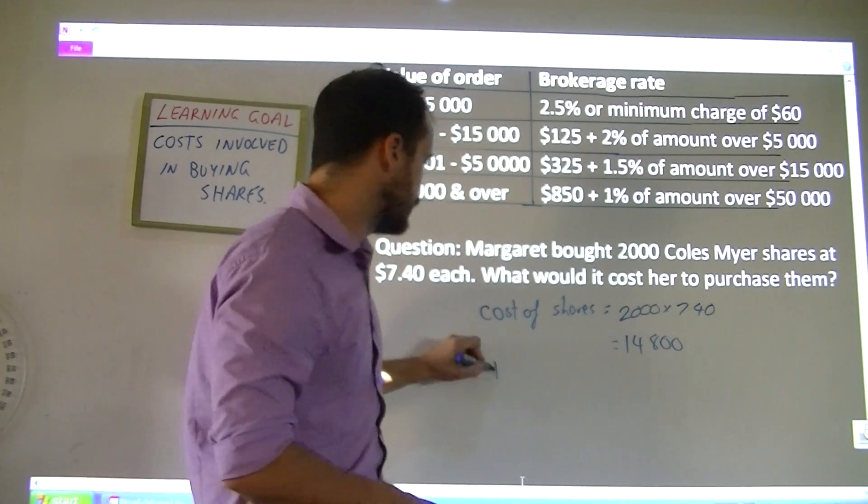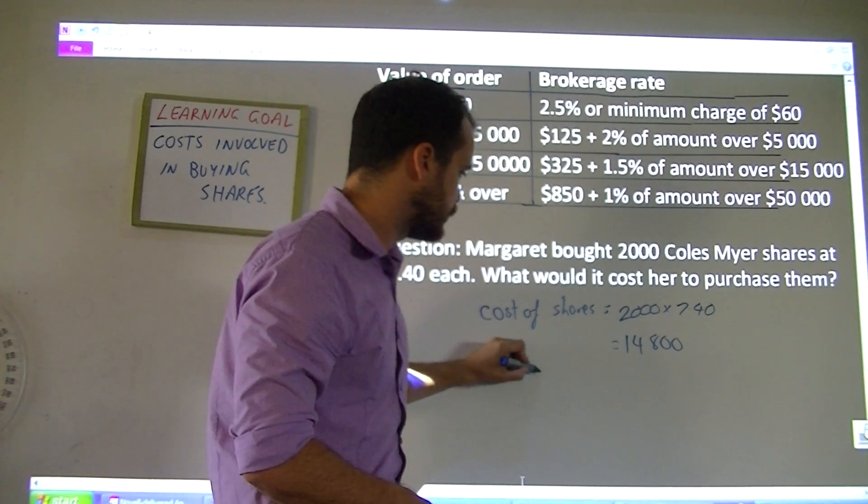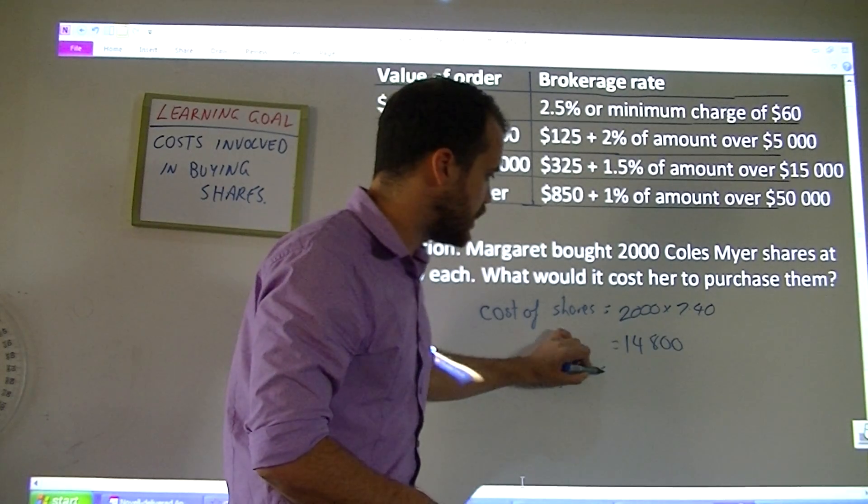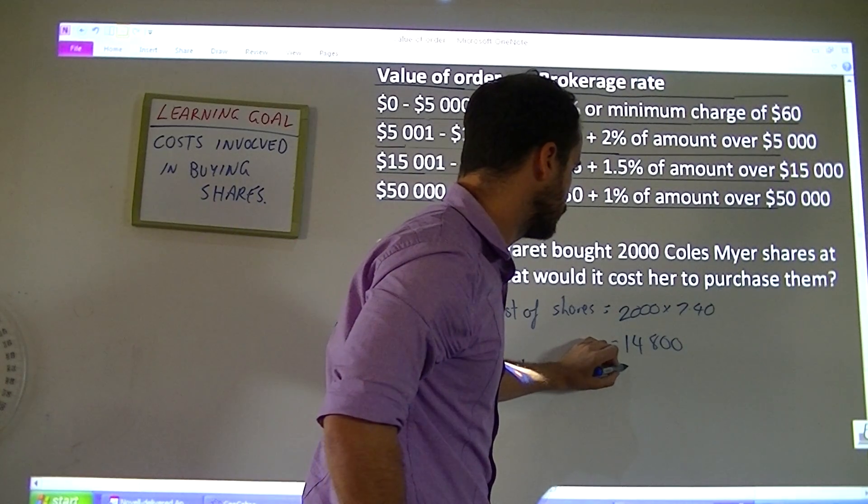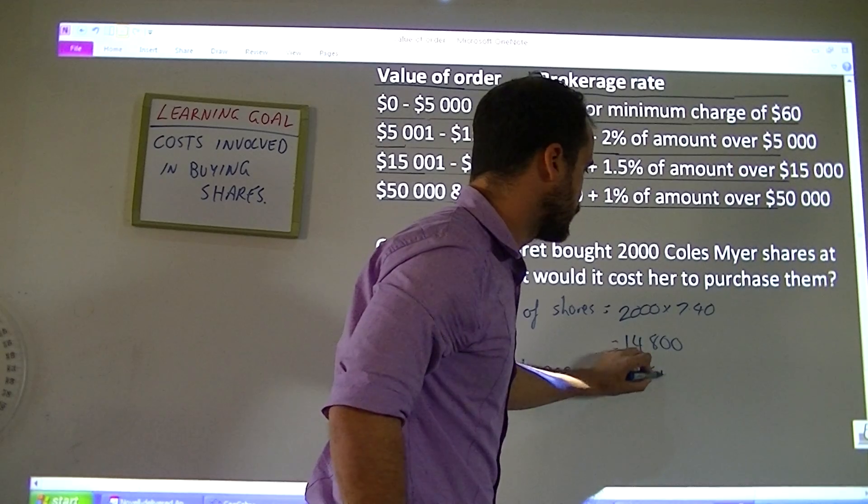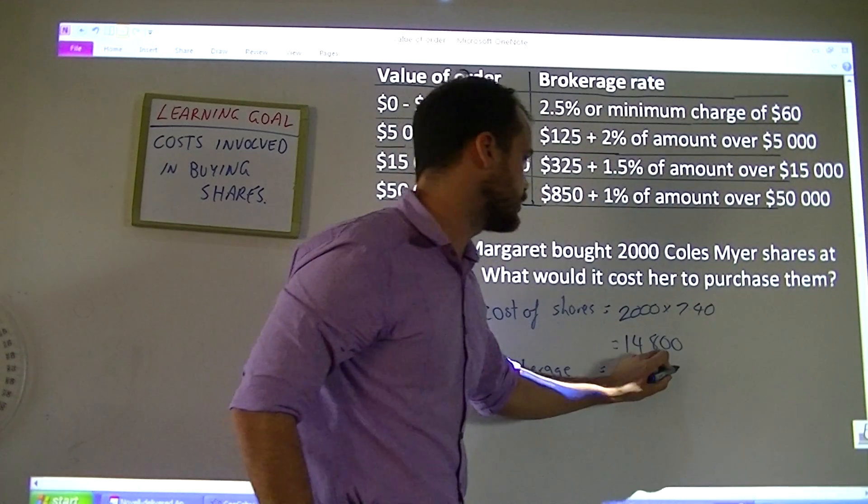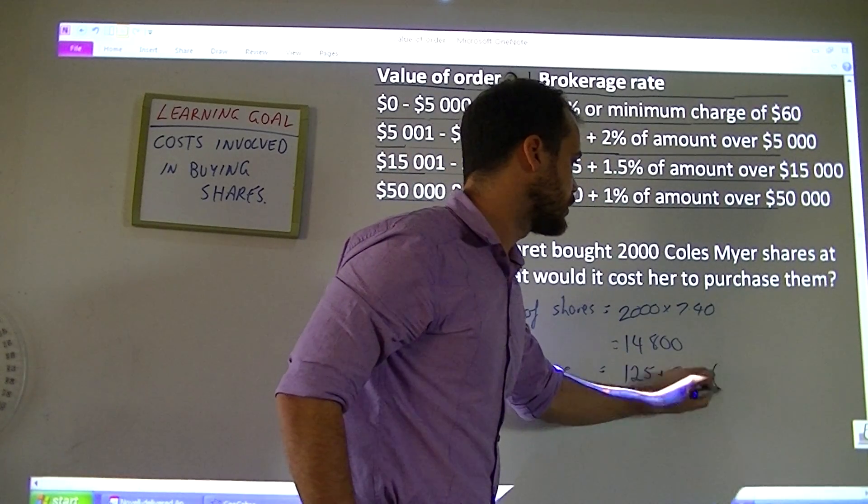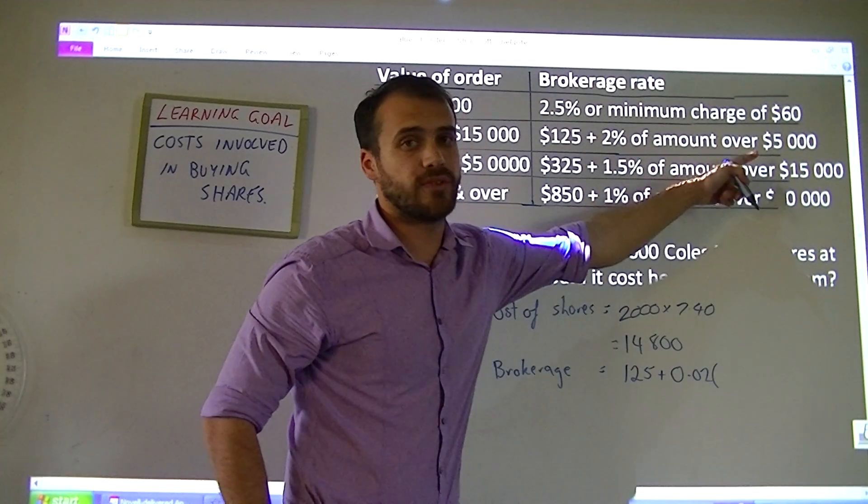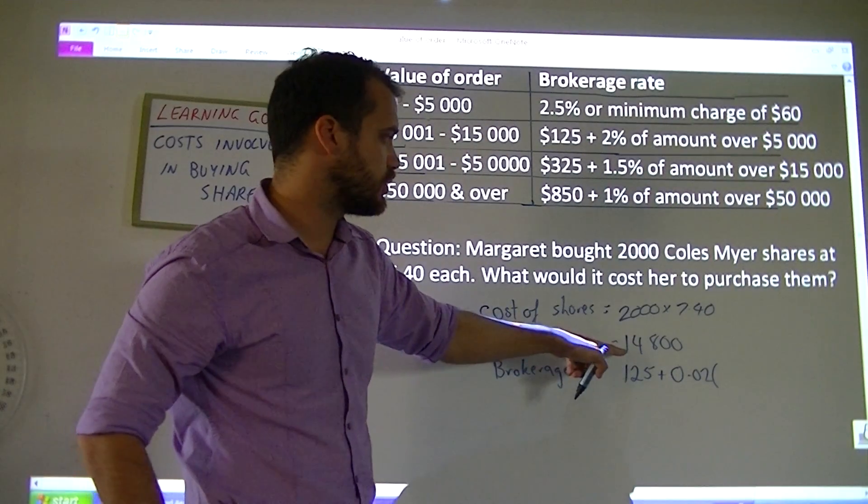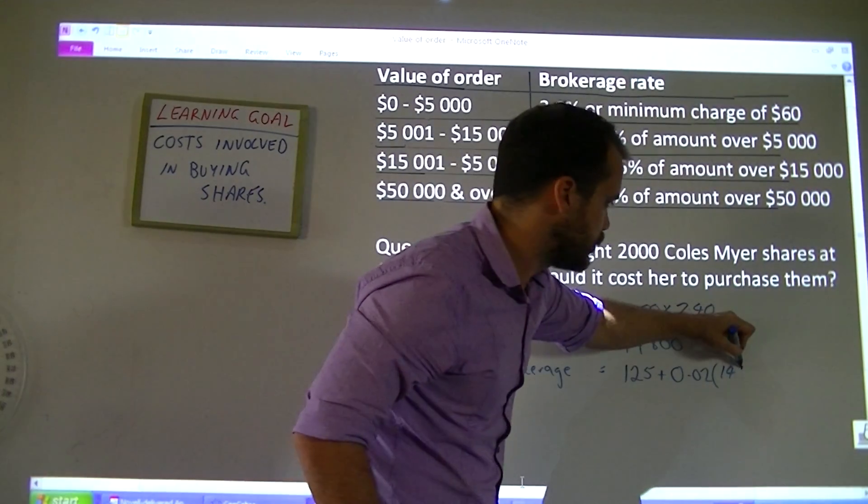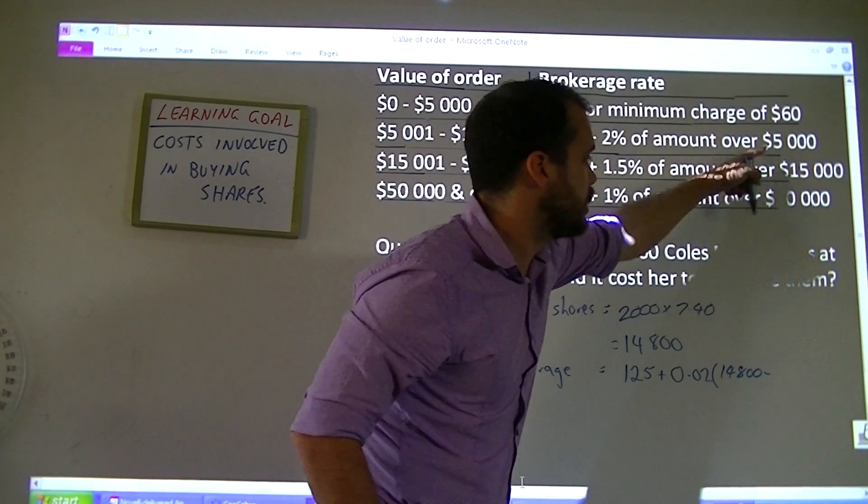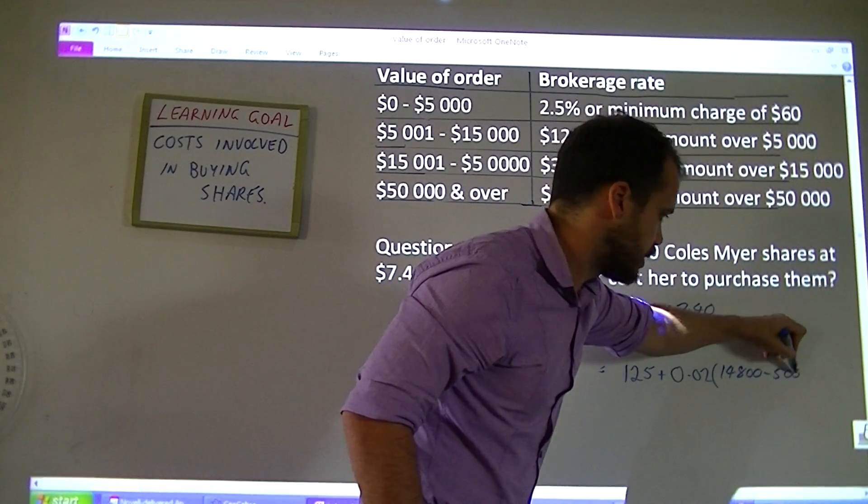The brokerage fee is going to be $125 plus 2% of the amount over $5,000. We've got cost of shares $14,800, so we need to multiply 2% by $14,800 minus that $5,000.